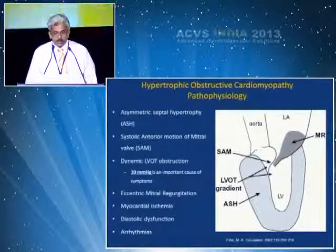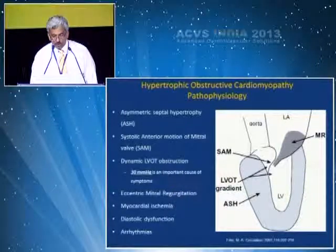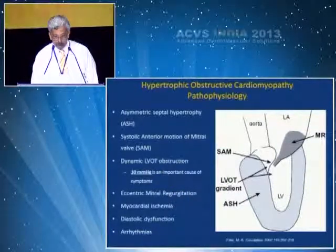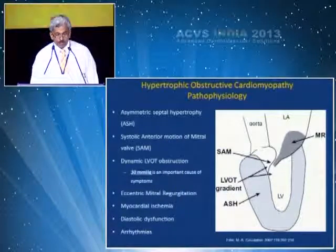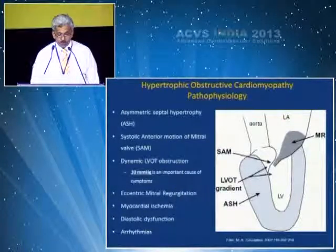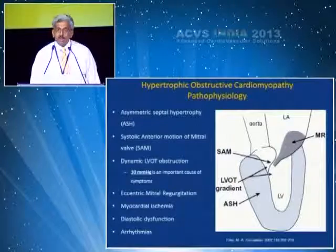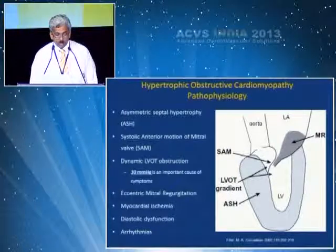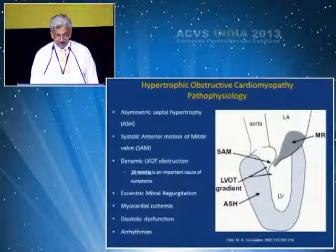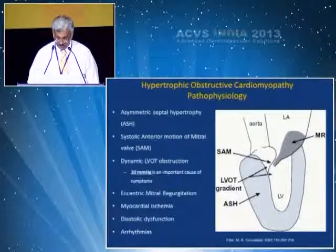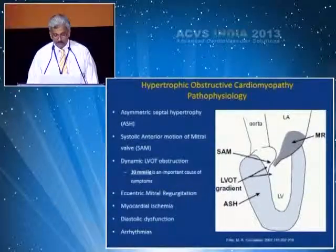Looking at the pathophysiology of hypertrophic obstructive cardiomyopathy, you can see clearly that there is asymmetric septal hypertrophy, systolic anterior motion of the mitral leaflet, dynamic LVOT obstruction — with gradients more than 30 mmHg being an important cause of symptoms — eccentric severe mitral regurgitation, myocardial ischemia due to a demand-supply mismatch, diastolic dysfunction, and arrhythmias.